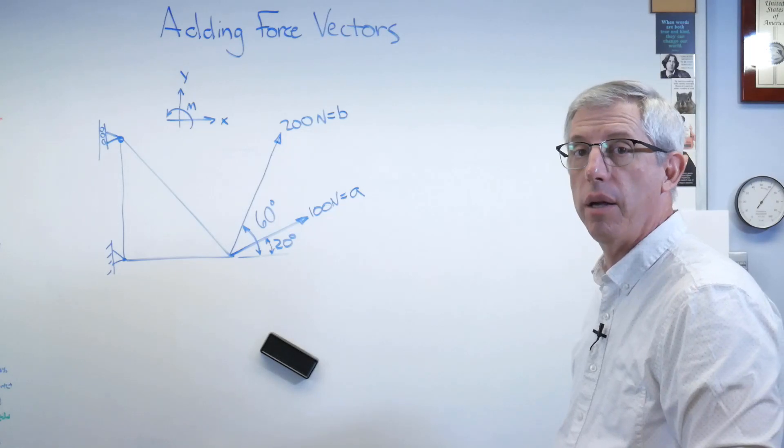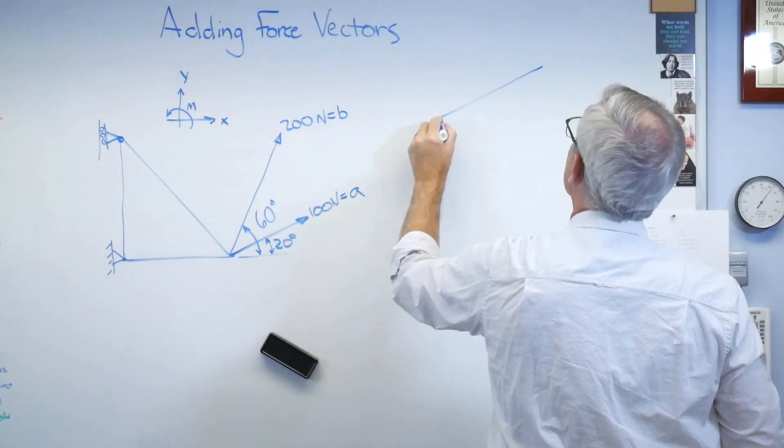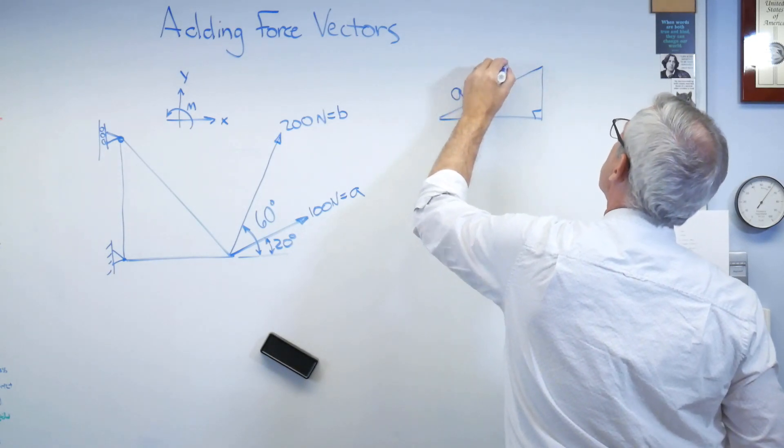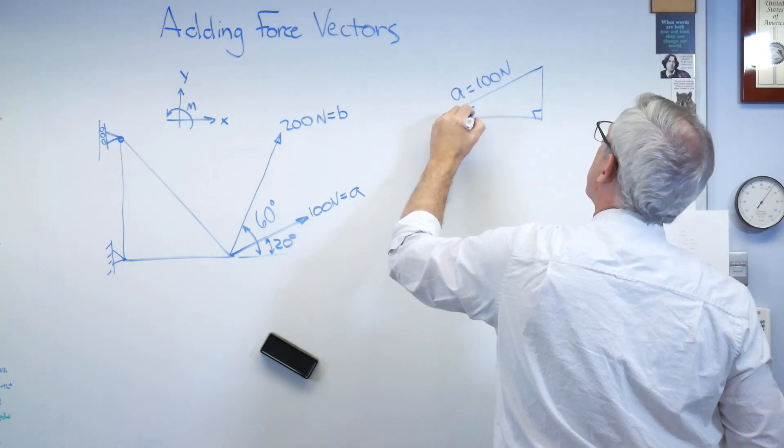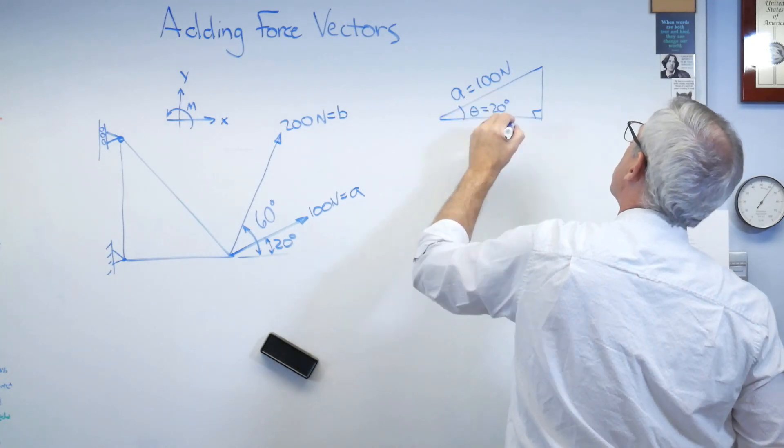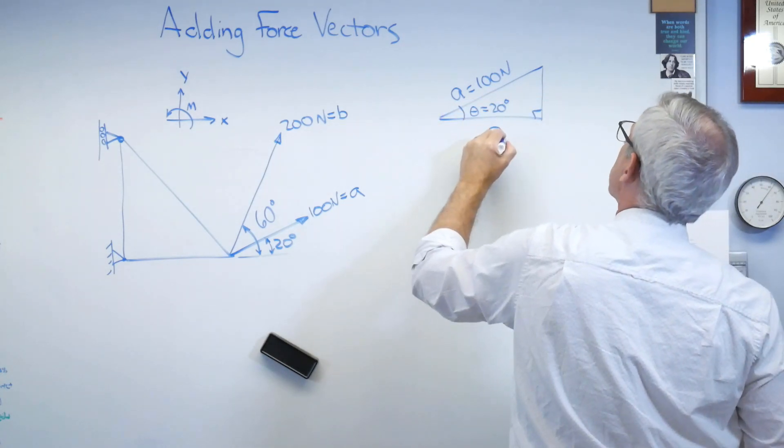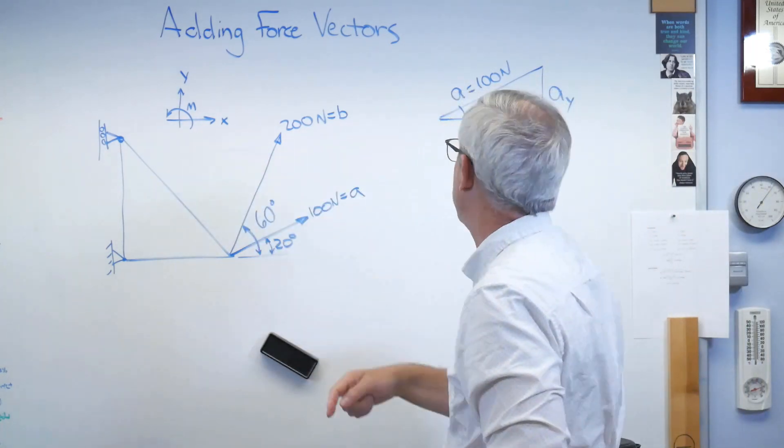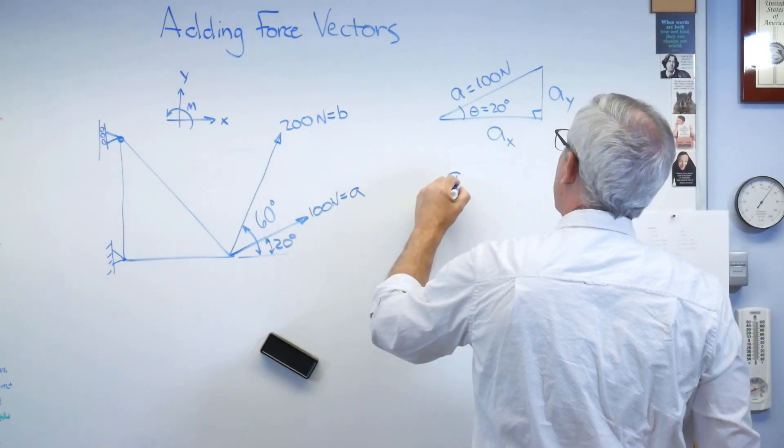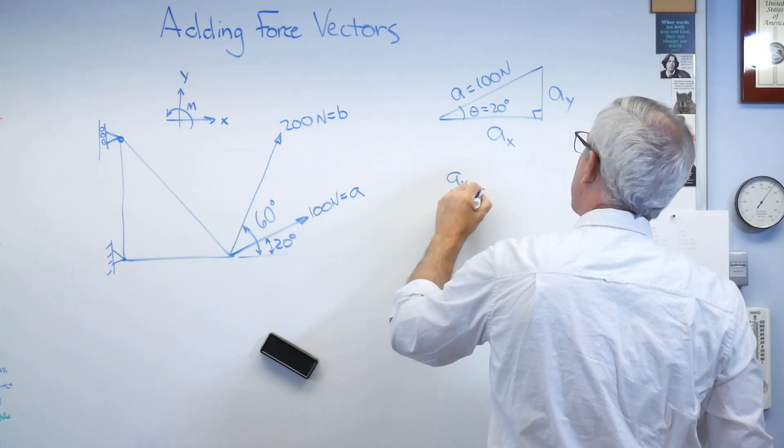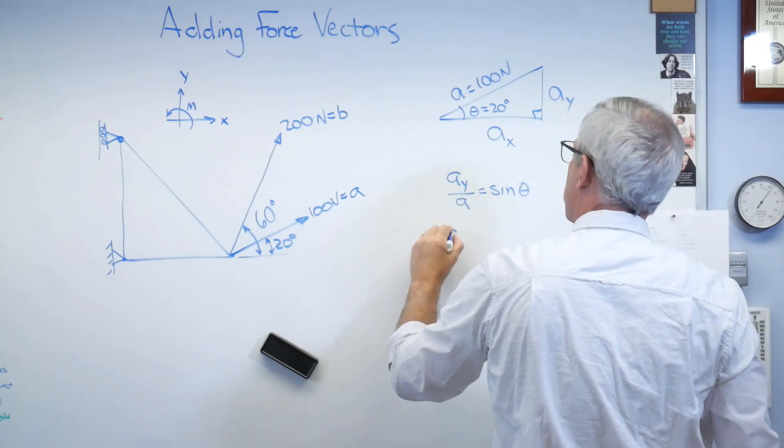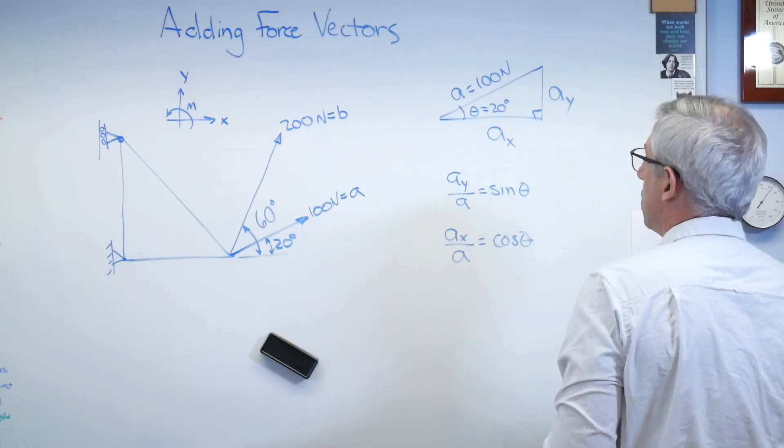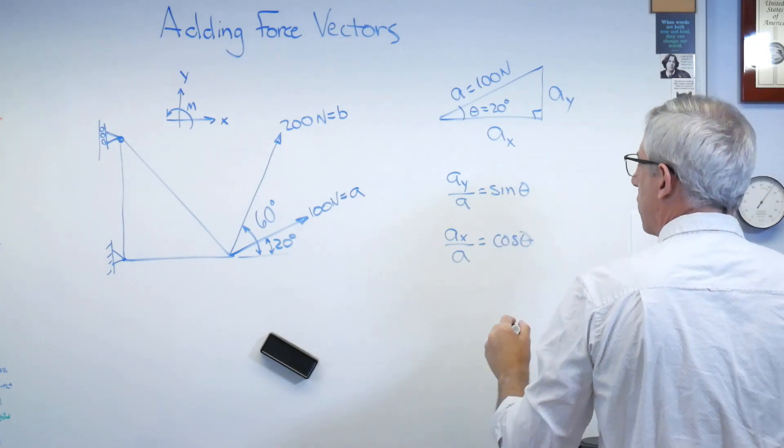So let's go ahead and draw a force triangle. 90 degrees, there's A, and that's 100 newtons, and this is theta, and that's 20 degrees. This is going to be Ax and this is going to be Ay because of our sign convention over there. Well, it looks to me like Ay over A equals sine theta, and Ax over A must be cosine theta.